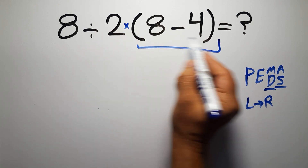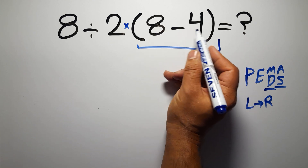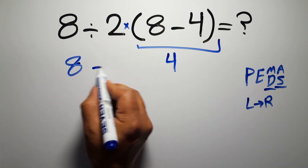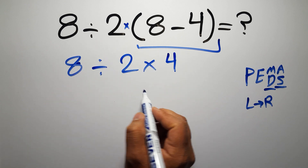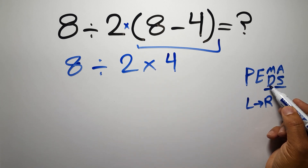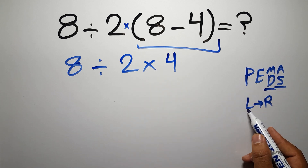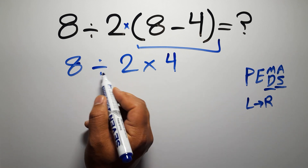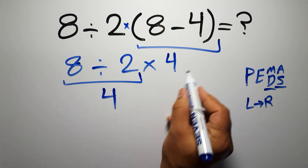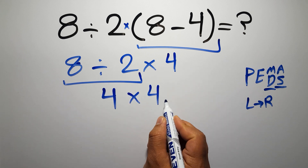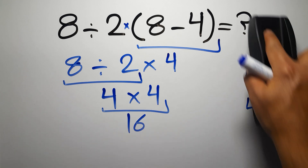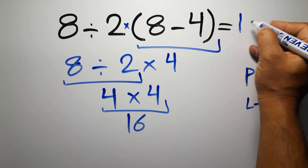So first, these parentheses. Inside the parentheses, we have 8 minus 4, which equals 4. So we now have 8 divided by 2 times 4. We have one division and one multiplication. Since multiplication and division have equal priority, we work from left to right — first, 8 divided by 2 gives us 4, and 4 times 4 equals 16. The correct answer is 16.